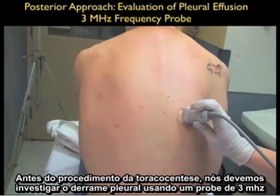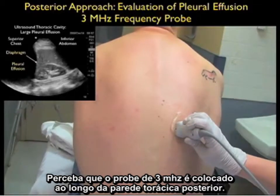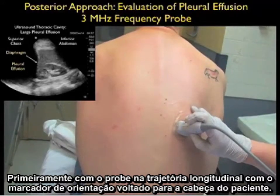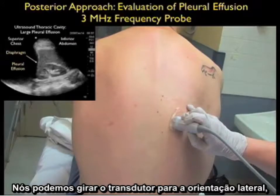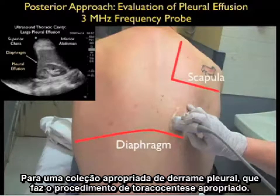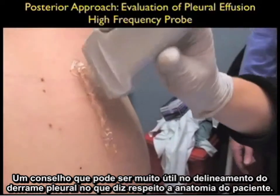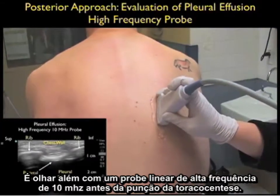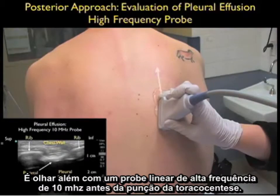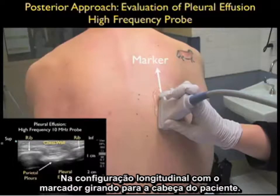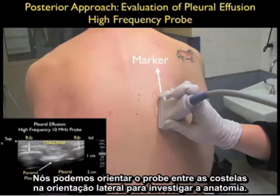Prior to the thoracentesis procedure, we'll investigate the pleural effusion using a three megahertz probe placed along the posterior chest wall, first with the probe marker in the long axis trajectory oriented towards the patient's head. We can then swivel the probe into the lateral orientation with the probe marker lateral to further investigate above the diaphragm for a suitable collection of pleural effusion. A clinically helpful technique is to further delineate the pleural effusion using a 10 megahertz high-frequency linear array probe, placed along the posterior chest wall in the long axis configuration or oriented in between the patient's ribs in the lateral orientation.